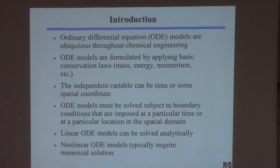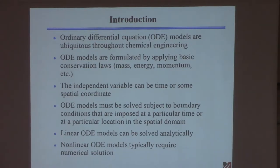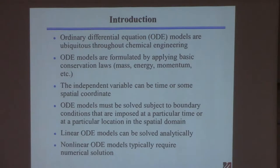I've always wanted to use the word ubiquitous — you don't get to use it every day, so I threw it in this first sentence. Ordinary differential equation models are the most common type of model you see in chemical engineering. When you write an energy balance, that's a model. We know energy is conserved, but you don't know enough about the system to say it's the true description — it's your model of what you think is happening. You've already been doing modeling when you took mass and energy balances, and in thermo when you come up with an equation of state.